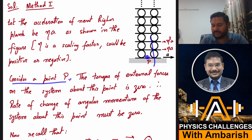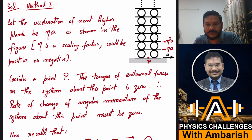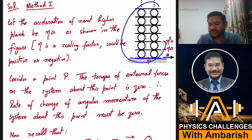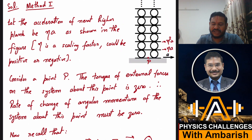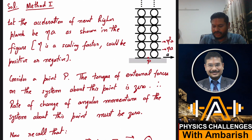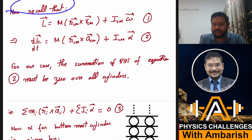Consider a point P at the bottom. At this point, the external forces are normal reactions and gravity (mg, mg) and the pulling force on the plank. The net external torque about this point is zero. Therefore the angular momentum of the entire system about this point is conserved, and since initial angular momentum is zero, it must always remain zero. So the rate of change of angular momentum about this point is zero — that is the key equation I will use.